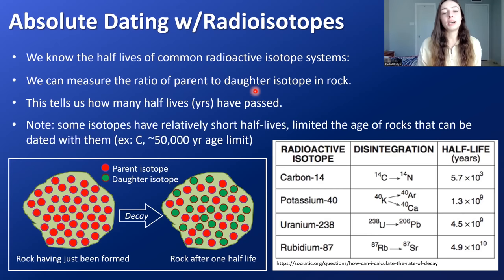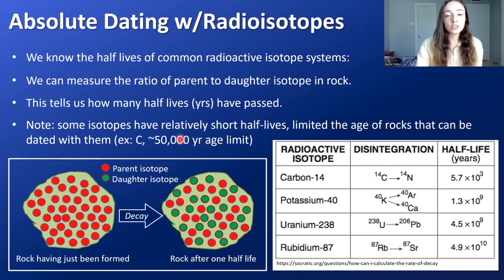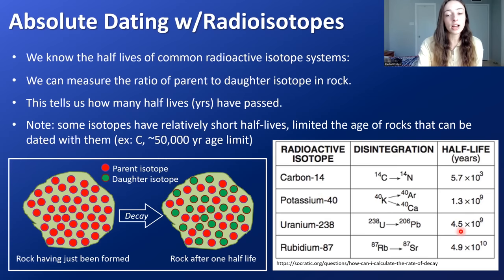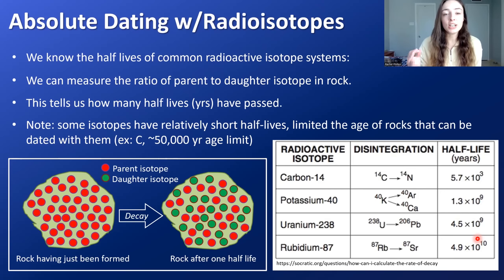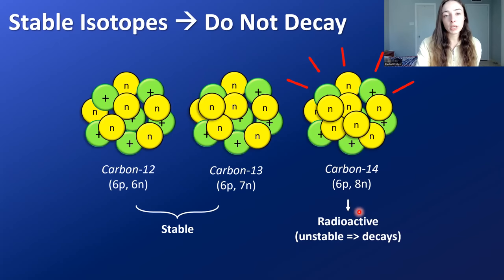Some isotopes have relatively short half-lives, like carbon-14 at around 5,700 years. After about 50,000 years, no parent isotope remains and you can no longer get the parent-to-daughter ratio, so you can't date rocks older than ~50,000 years with carbon dating. A lot of people think carbon dating is the only method geologists use — it isn't. We did not date Earth with carbon dating; we use isotope systems with much longer half-lives for that.